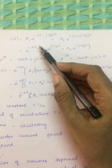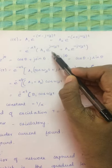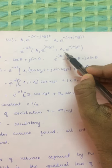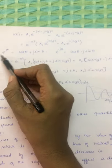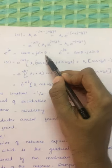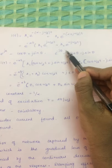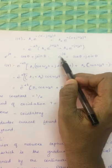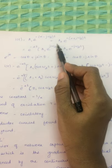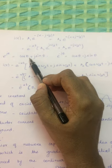e^(j*theta) can be written as cos(theta) + j*sin(theta), and e^(-j*theta) as cos(theta) - j*sin(theta). Instead of e^(j*omega_d*t), we can substitute cos(omega_d*t) + j*sin(omega_d*t).